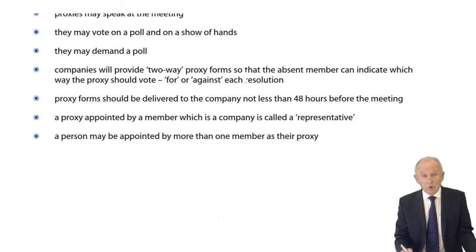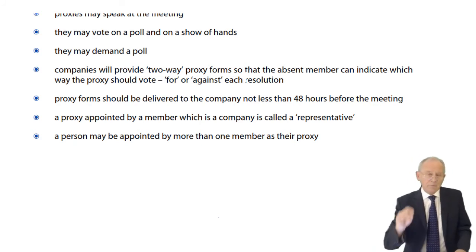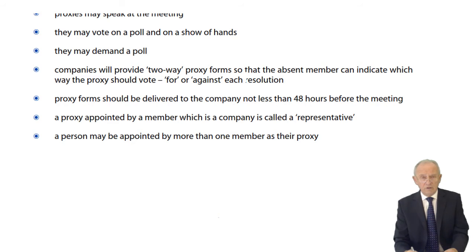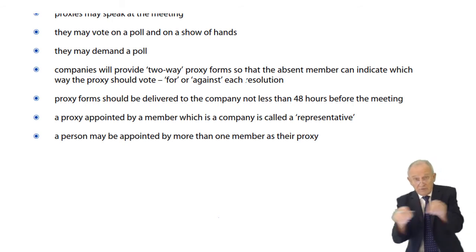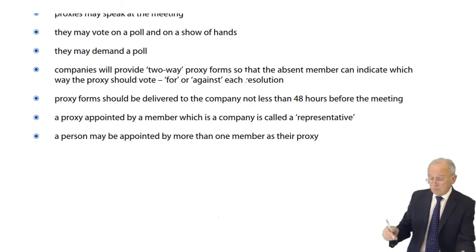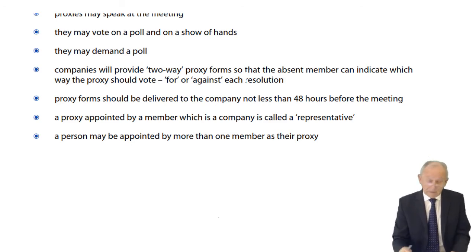One individual person may be appointed as proxy by more than one member — there may be 5, 6, or 15 different people. Proxy forms typically start with a legend saying 'I hereby appoint the chair to be my proxy, or failing him...' and then the member writes the name of the person they want to attend. They may cross out the word 'chair' or specify their own person. Typically, a member will just sign the proxy form and send it in indicating how they want to vote.